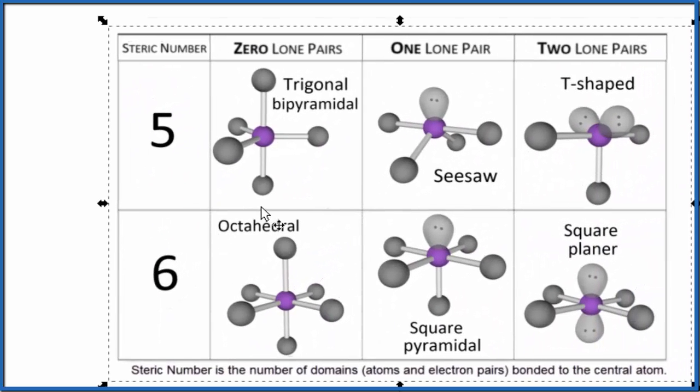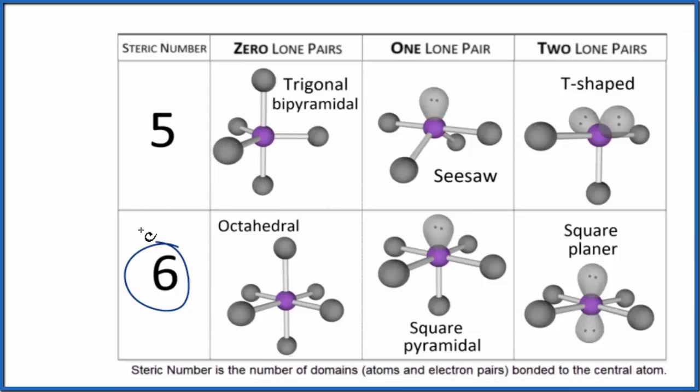So if we have a steric number of six, the five atoms and the one lone pair, that gives us a steric number of six. And we said one lone pair. We go down and there's our square pyramidal molecular geometry.